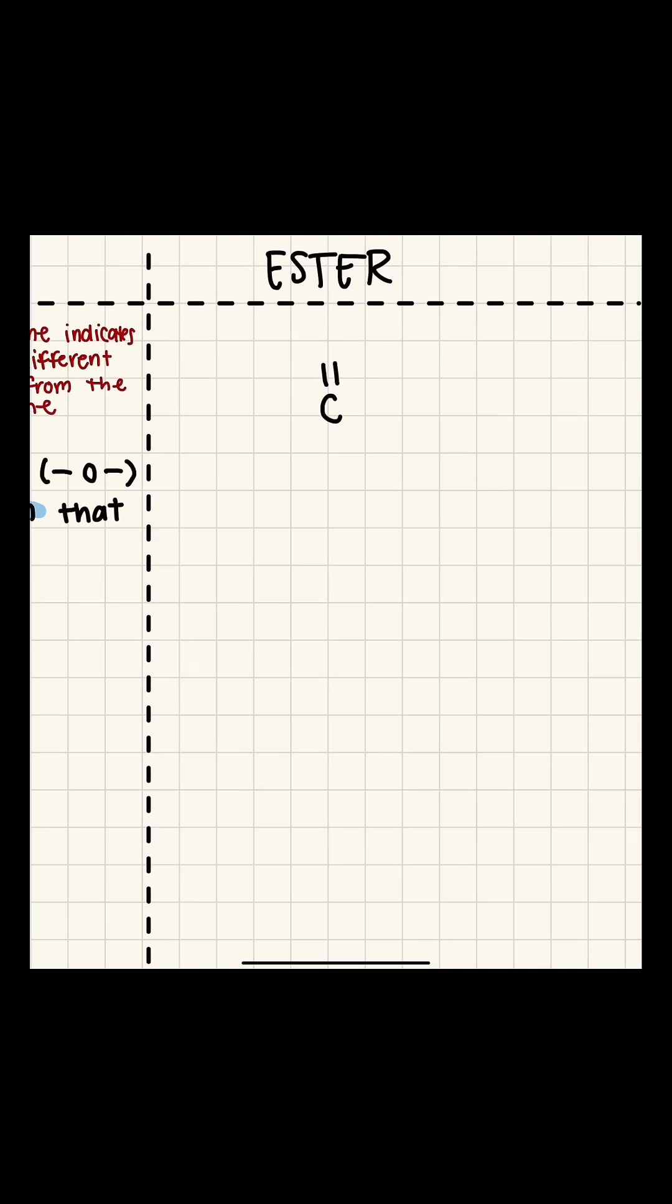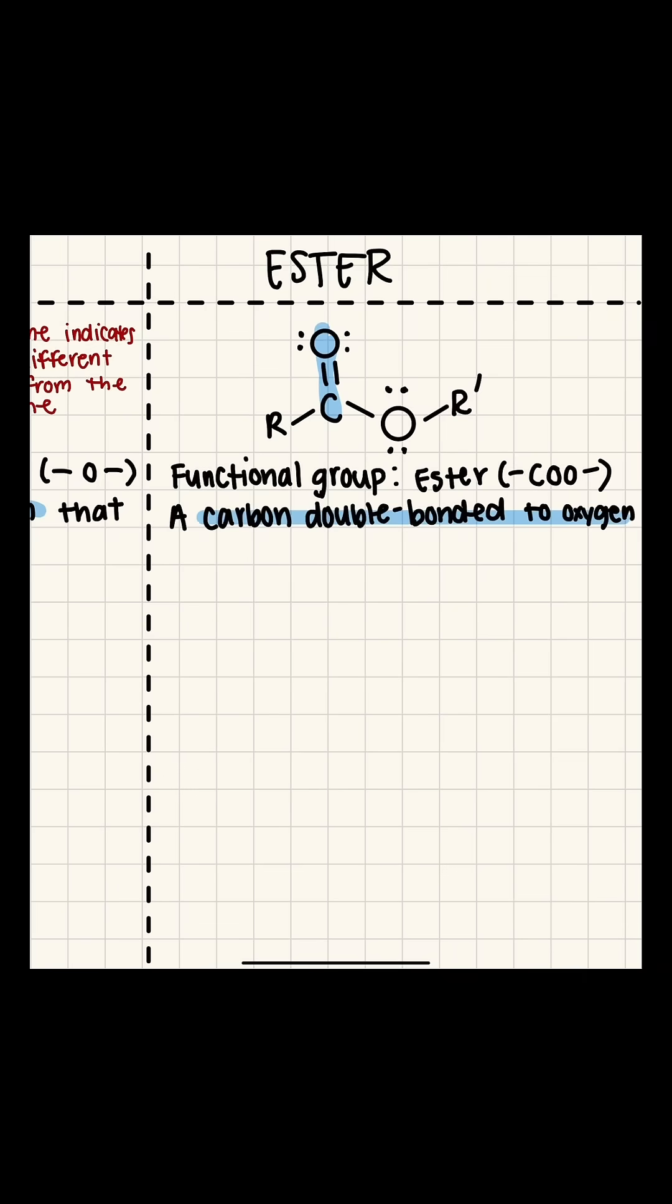Now on to our ester groups. Esters are a little bit more complicated. They're going to consist of a carbon that is double bonded to an oxygen, with that same carbon being single bonded to another oxygen, which is then going to be attached to another R group.